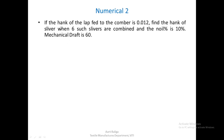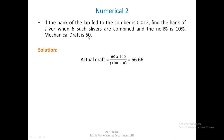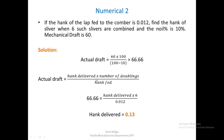For the next problem: if the hank of the lap fed to the Comber is 0.012, find the hank of the sliver when 6 such slivers are combined and the noil is 10 percent, given the mechanical draft. The first step is to calculate the actual draft using the noil percentage. The actual draft comes out to be 66.66, which is more than mechanical draft, as expected for a Comber. Now, actual draft equals hank delivered divided by (hank fed multiplied by number of doublings). Substituting the values with 6 doublings and the given hank fed, hank delivered comes out to be 0.13.